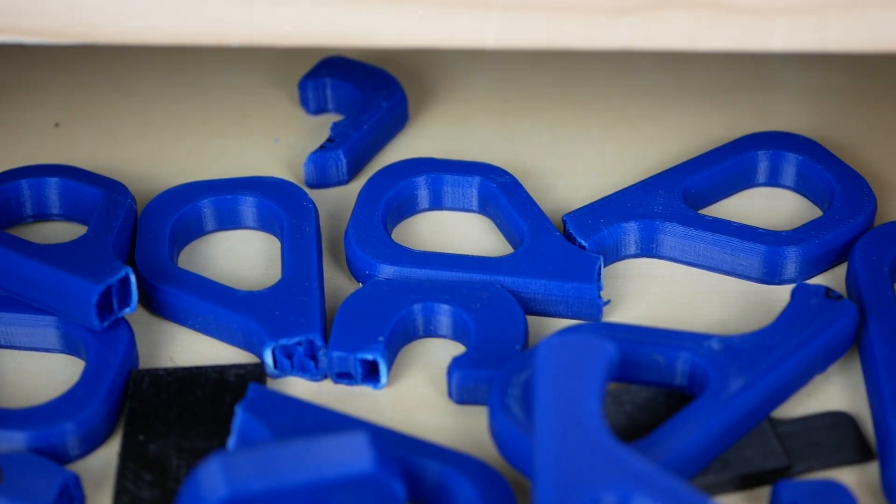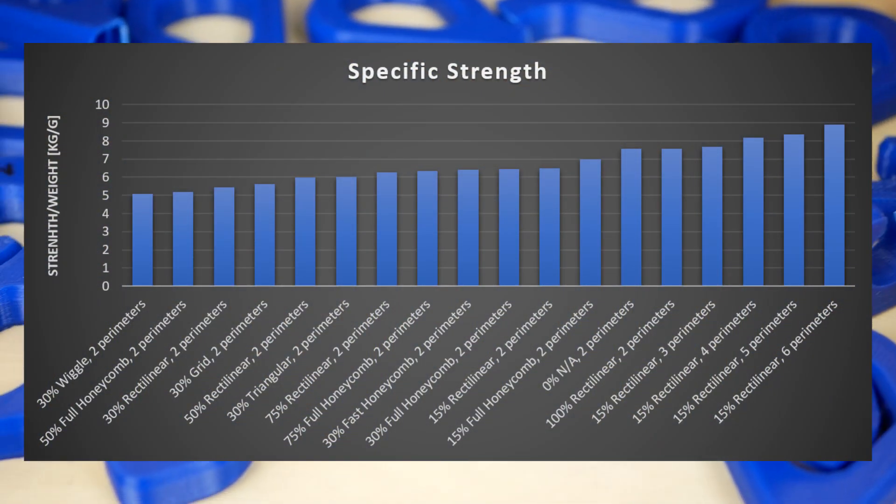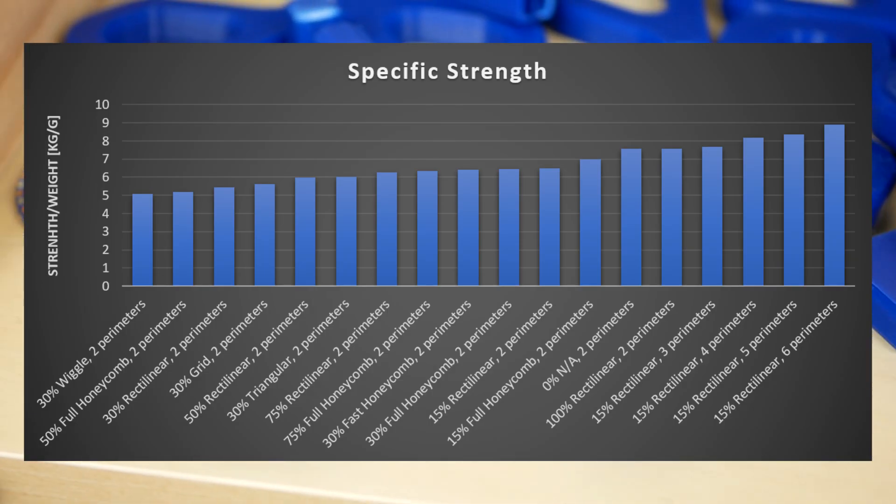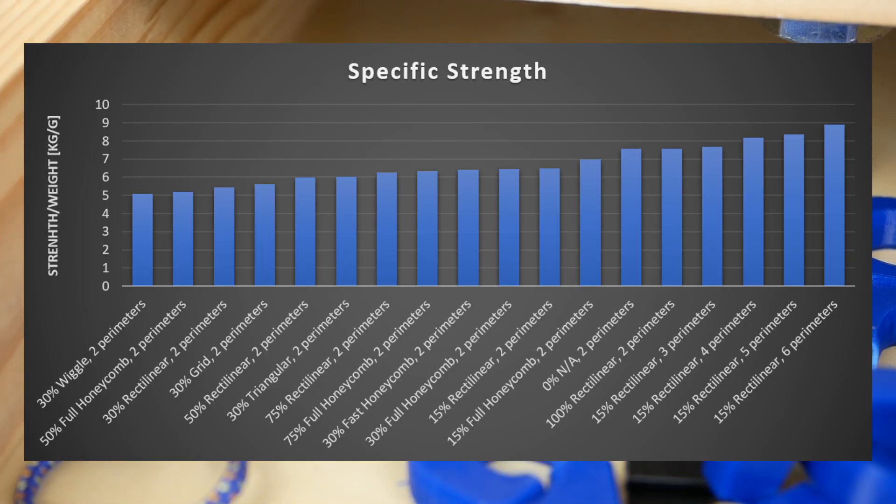Ok, so what's my verdict? If you want to print stronger parts increase the number of perimeters and top and bottom layers. Don't only crank up the infill ratio.